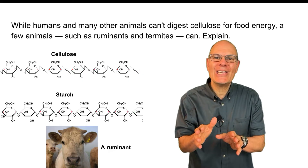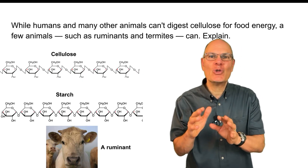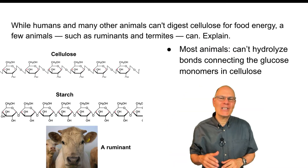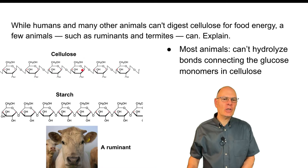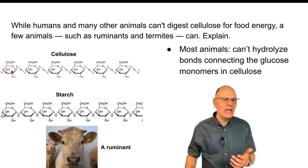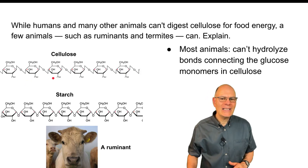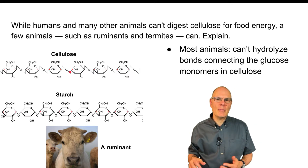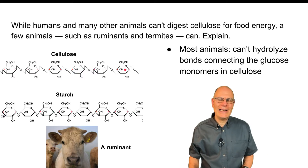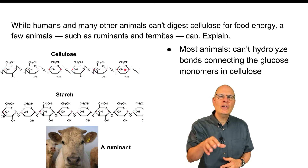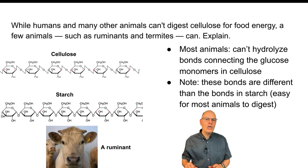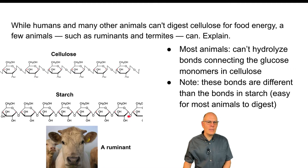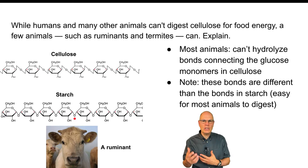While humans and other animals can't digest cellulose for food energy, a few animals such as ruminants and termites can. Most animals can't hydrolyze the bonds that connect glucose monomers in cellulose. It's a polysaccharide — a bunch of linked glucoses — but linked in a way that you don't have the enzymes to break that bond and free up the glucose monomers. You could eat lettuce or celery, high-cellulose foods, all day and never get enough calories to power your life processes. You do have the enzymes to break the bonds in starch, which enables you to convert starch into glucose and use it to power cellular respiration.